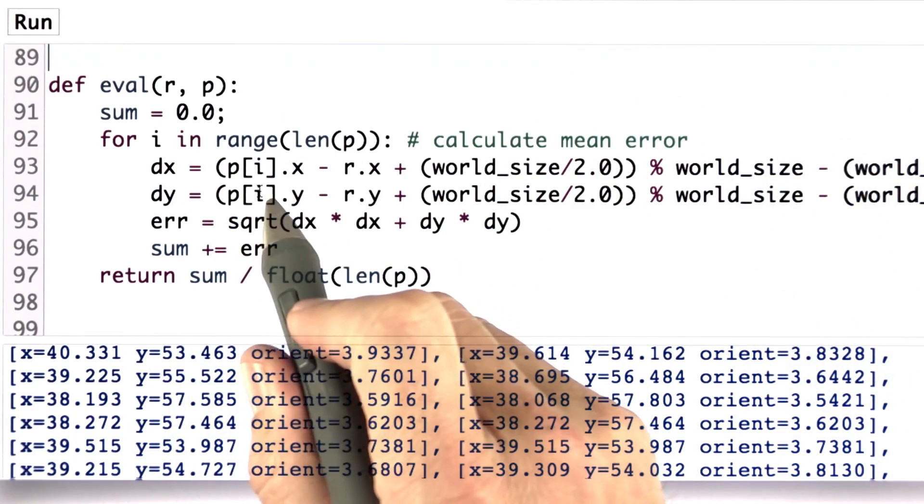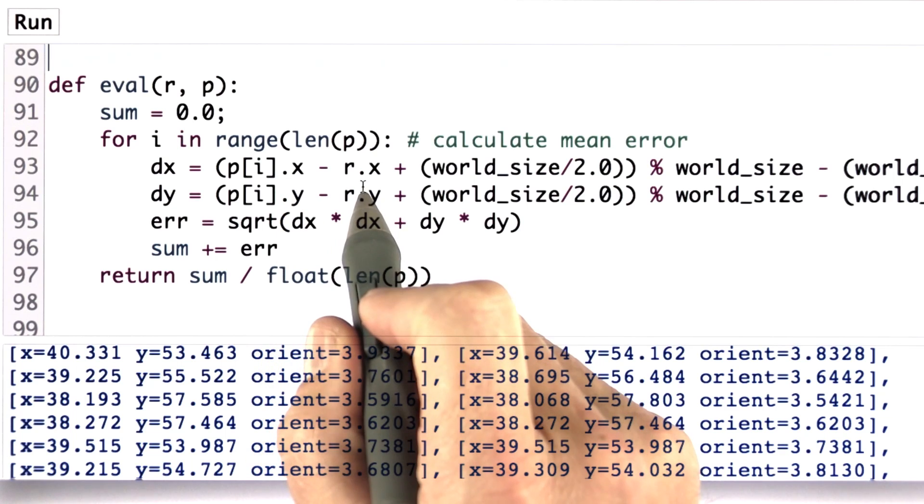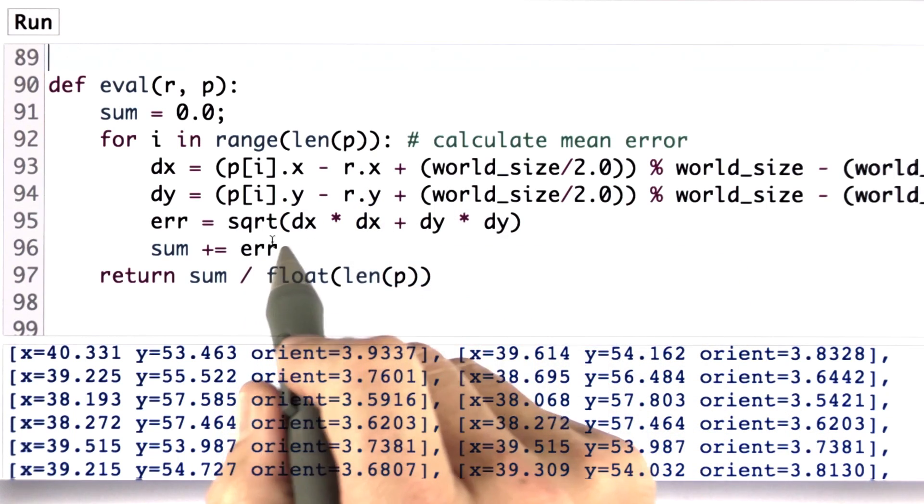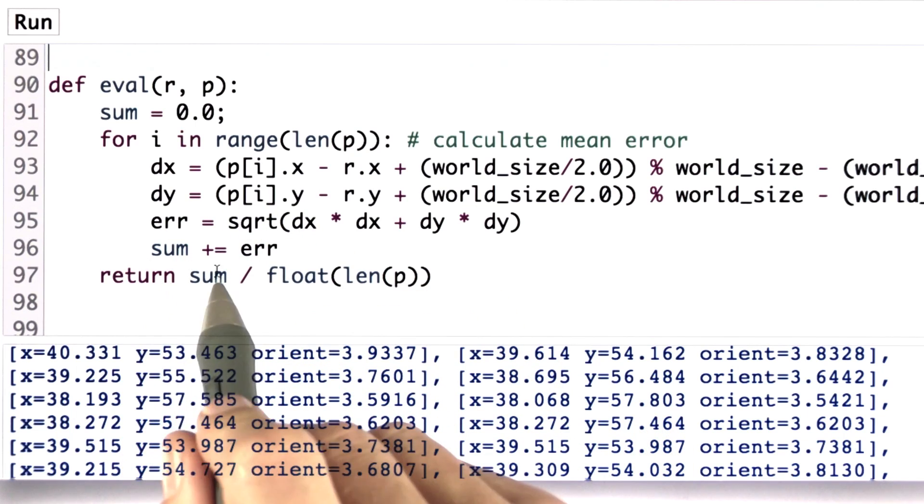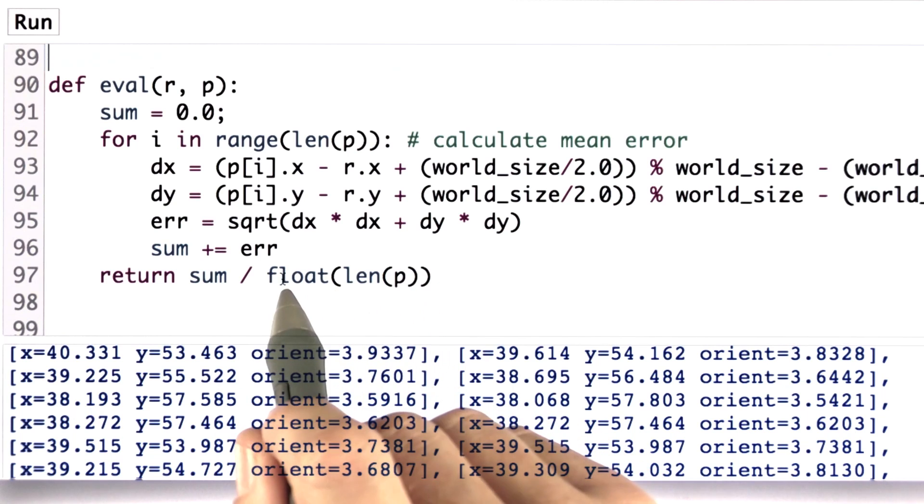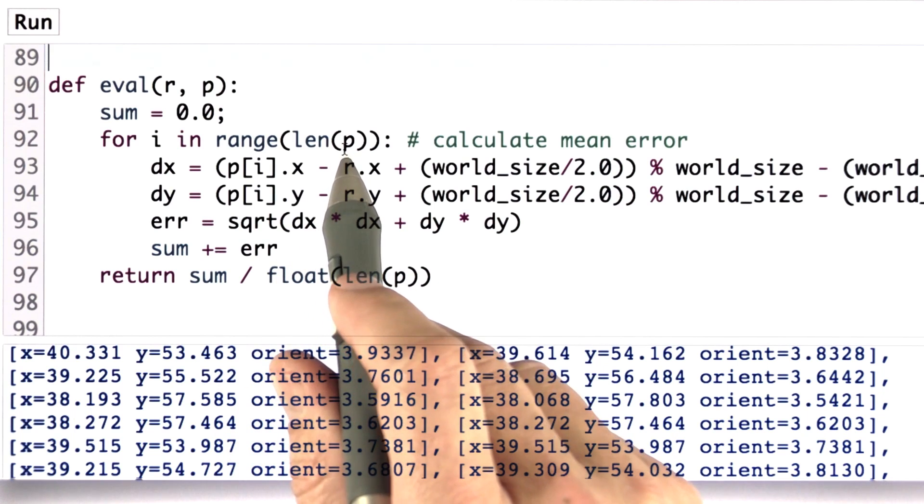And the way it does it, it basically compares the X of the particle with the X of the robot, computes the Euclidean distance of these differences and averages all of those. So it sums them all up and averages them through the number of particles, which is upper caps N.